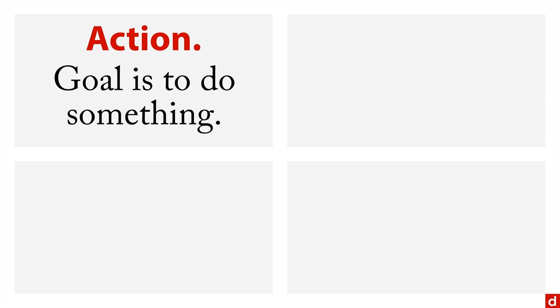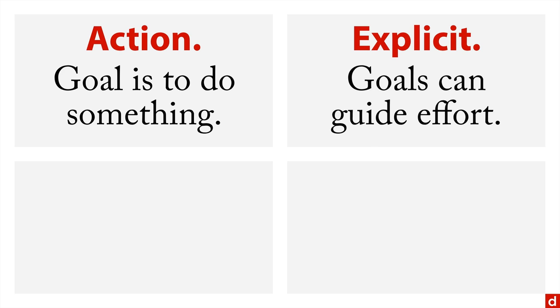There are a few particular reasons for this. First off, data science is action oriented — the goal is to do something as opposed to simply understand something, which I say as an academic practitioner. Also, your goal needs to be explicit, and that's important because goals can guide your effort. You want to say exactly what you're trying to accomplish, so you know when you get there.